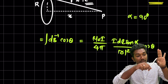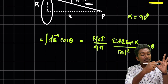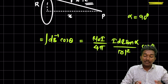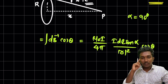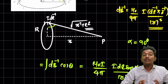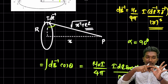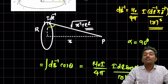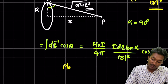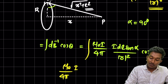Looking at the diagram, you can see that the angle between dl and r — which is the vector from the current element to point P — is always 90°. The element dl is tangential to the circle, and r points from the element to P, making them perpendicular. So sinα = sin90° = 1, and that part is sorted.